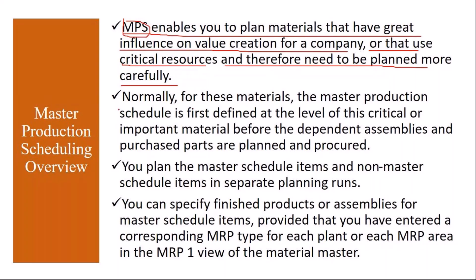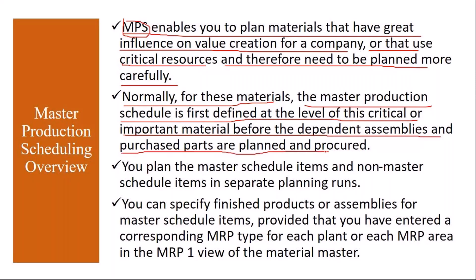Normally, for these materials, the Master Production Schedule is first defined at the level of the critical or important material, before the dependent assemblies and purchased parts are planned. So these MPS items — critical items — are planned first. After that, the remaining dependent materials like raw materials, packing materials, semi-finished goods are planned later using MRP.